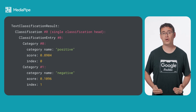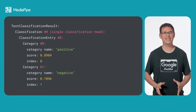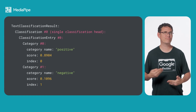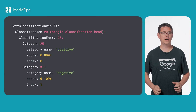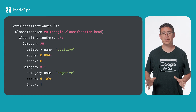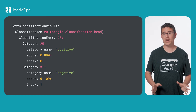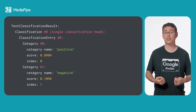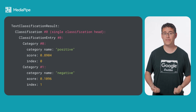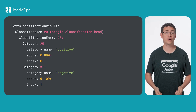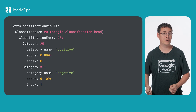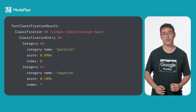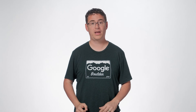This result object is also pretty simple. It will contain a list of possible categories from the model, as well as the confidence score in that category being correct for your input, like you can see here in this data structure example.